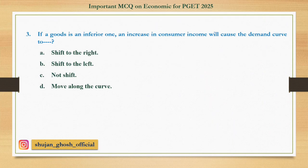Question number three: If a good is an inferior one, an increase in consumer income will cause the demand curve to — option A: shift to the right; B: shift to the left; C: not shift; D: move along the curve. Answer: shift to the left.